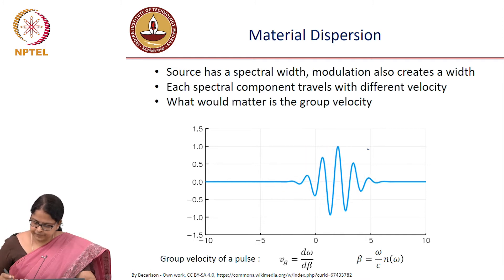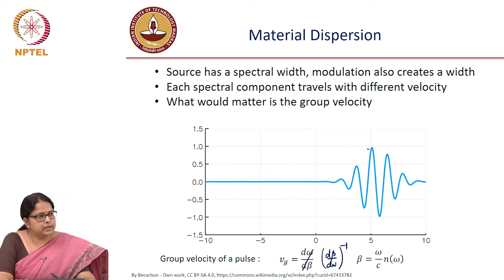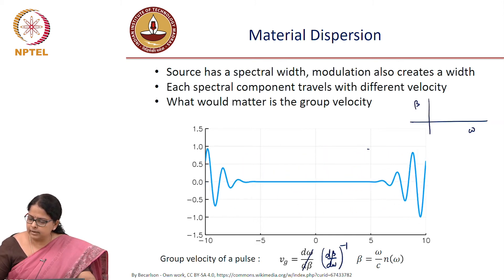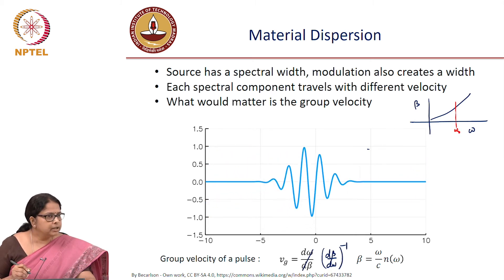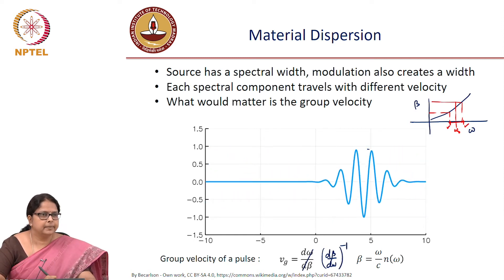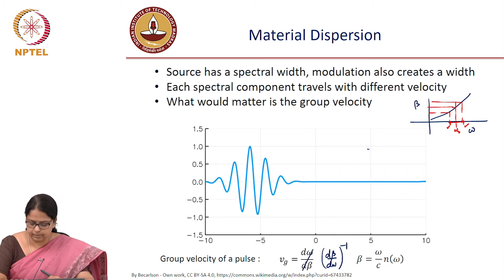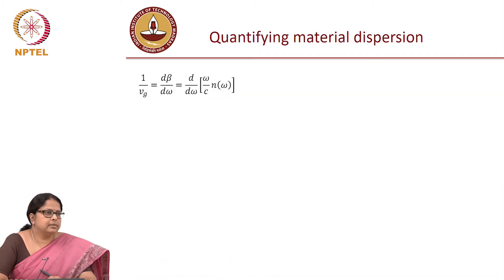Group velocity is the inverse of d beta by d omega. We can calculate this. In your beta versus omega curve, you have a pulse modulated at omega naught with a spectral width around omega naught. You want to calculate the speed difference between different spectral parts of the pulse — not the difference in beta itself, but the difference due to d beta by d omega, the group velocity term.